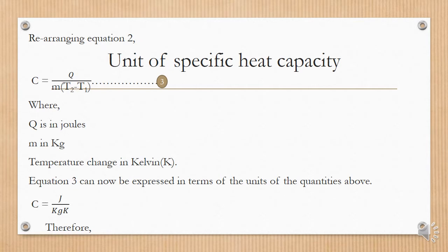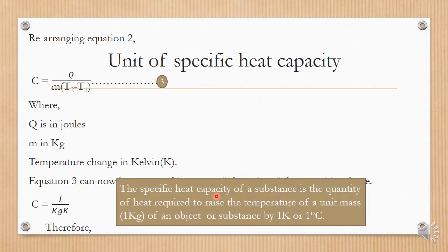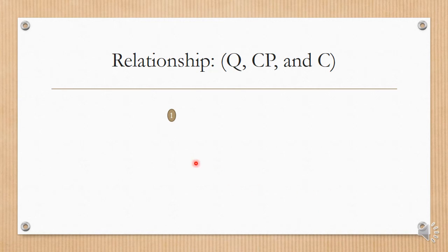Therefore, the specific heat capacity of a substance is the quantity of heat required to raise the temperature of a unit mass — that is, one kilogram — of a substance by one Kelvin or one degree Celsius. The difference between specific heat capacity and heat capacity is that specific heat capacity deals with a unit mass, while heat capacity deals with a given or entire mass of an object.